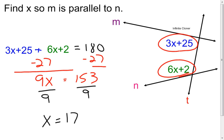If I plug x back into the two angle expressions and find the measure of each one, I'll find that their sum is 180 degrees. Therefore I've solved the problem — I found the value of x that will make these two lines parallel.